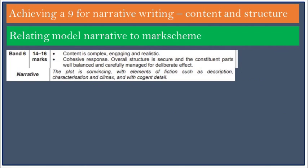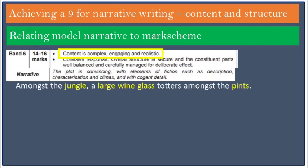So how does this response meet the band 6 criteria within the mark scheme, relating particularly to content and structure? Well, firstly, we're looking for complex, engaging, and realistic content. This is shown in a number of ways, including the sustained use of imagery to refer to people. In the example on screen, the group of people are described collectively as a jungle, the boorish men are pints, and the solitary woman is a large wine glass. The metaphor of the jungle emphasises the idea that somehow this group are not as civilised as they might believe themselves to be, and by extension, that the woman may not necessarily be safe from uncivilised, predatory behaviour. Indeed, the use of the word 'jungle' foreshadows the groping of the woman's bottom which takes place later in the same paragraph.